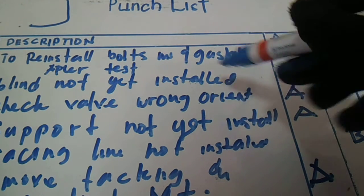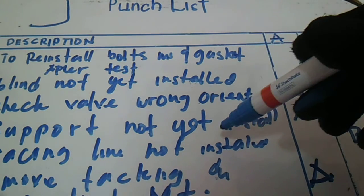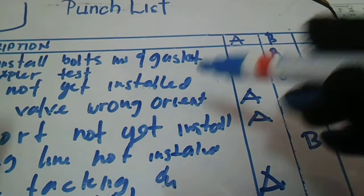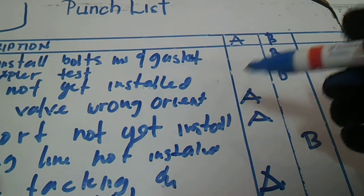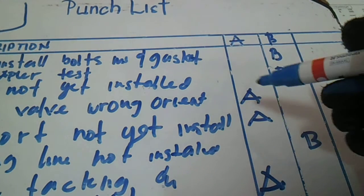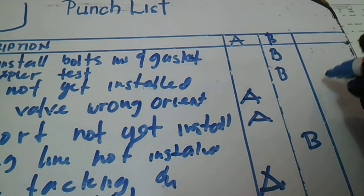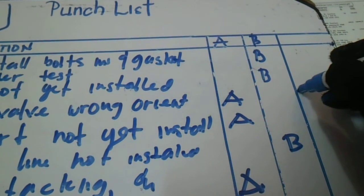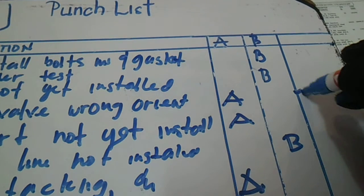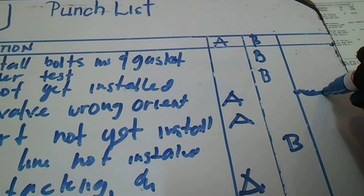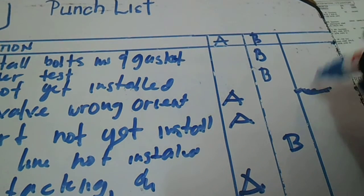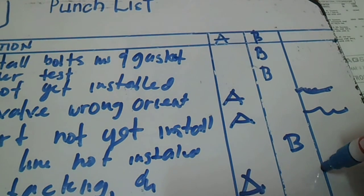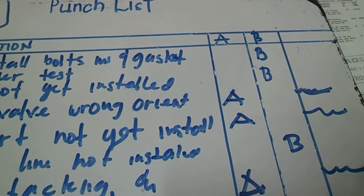Once construction has finished all category B items, then both parties countersign — the inspector countersigns here and countersigns the category section as well.